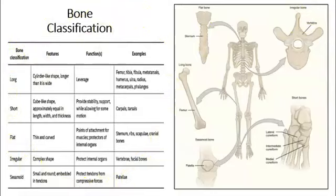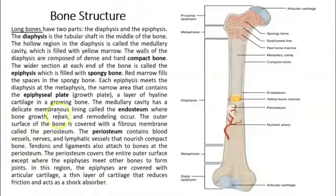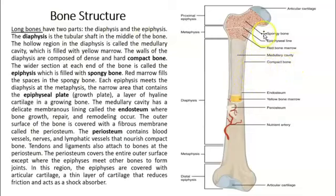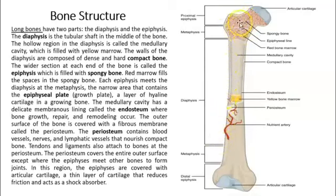Based on structure — what they are composed of — we can say that we have compact bone on the outside and spongy bone on the inside. In a cross-section figure, you can clearly see that the outside area is compact bone and the inside is spongy bone.